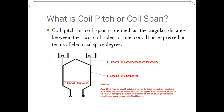What is coil pitch or coil span? Basically, coil pitch or coil span is the angular space angle in between the two coil sides. The angular displacement between the two coil sides is equal to one pole pitch. Since one pole pitch in an electrical machine is equal to 180 degrees, the coil span or coil pitch in this case is 180 degrees.